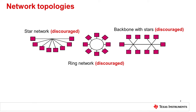Three common topologies which have disadvantages are the star network, ring network, and the backbone with star network. The star and backbone with star networks are discouraged because they purposely extend the stub length from the main transmission line. The ring network is discouraged because reflections from nearby connection points are more likely to degrade signal integrity at the intended receiver and may also reflect back into the transmitter. If any of these topologies must be used, the data rate should be drastically reduced to ensure reliable communication.